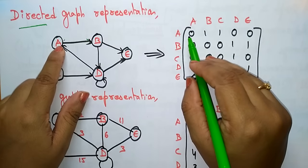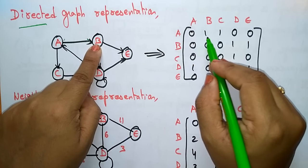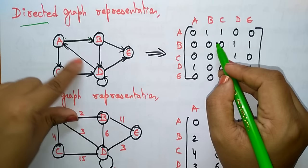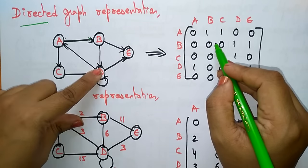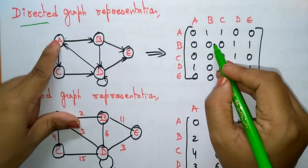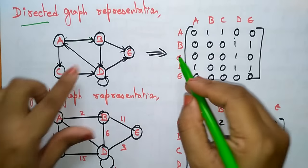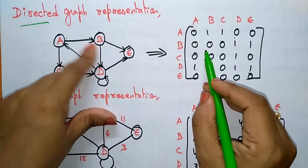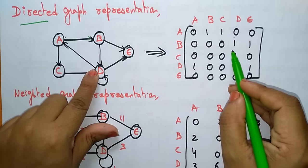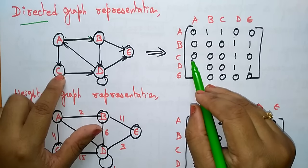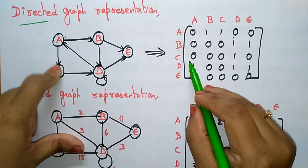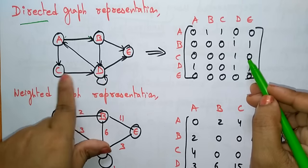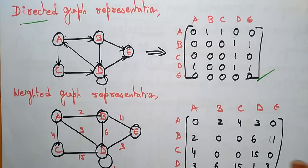Now let us calculate the adjacency matrix for the directed graph. A to a - 0. A to b - there is a direction, 1. A to c - there is a path, 1. A to d - the edge exists but the direction is from d to a, not a to d, so it is 0. B to a - there is no direction, so 0. B to b - 0. B to c - 0. B to d - 1. B to e - 1. From c to a - no direction. C to b - no direction. C to c - no. C to d - 1. C to e - no. You calculate the directed graph matrix in this way.